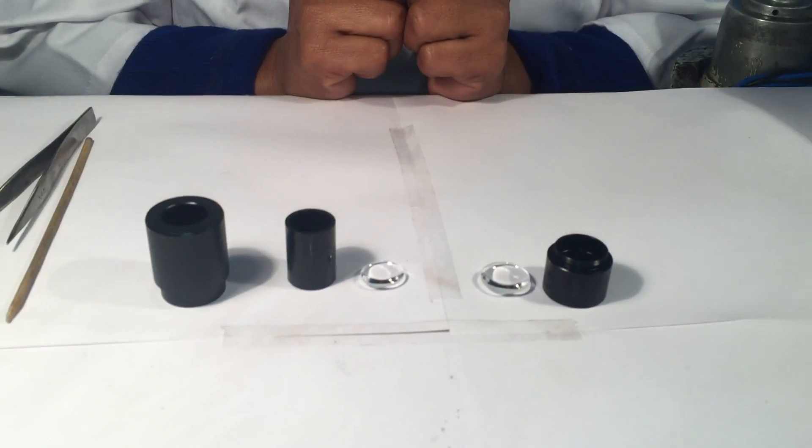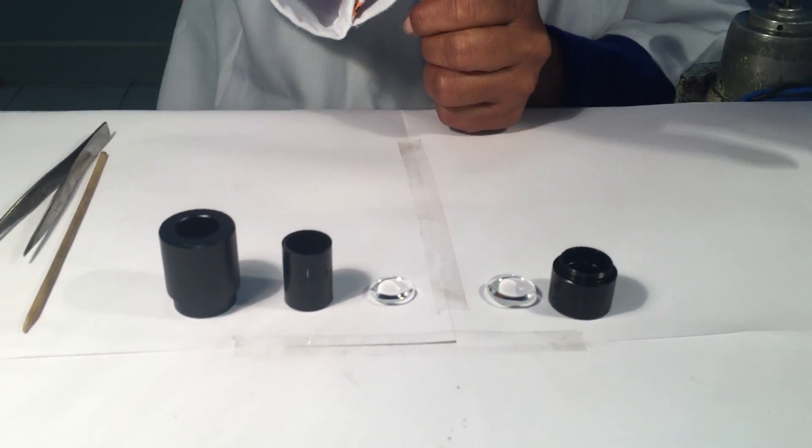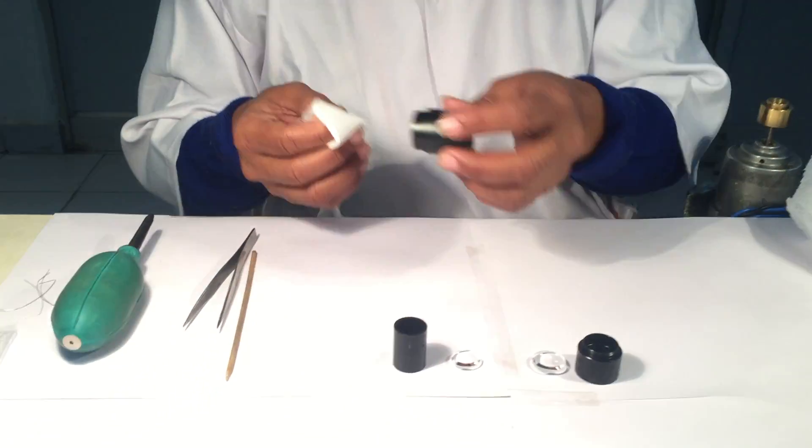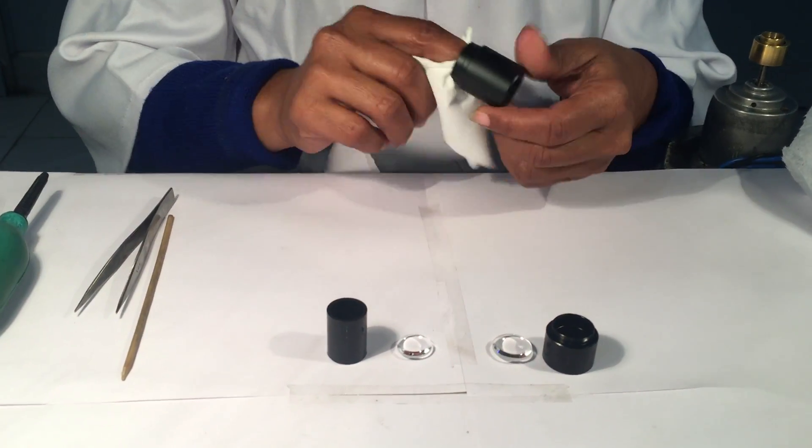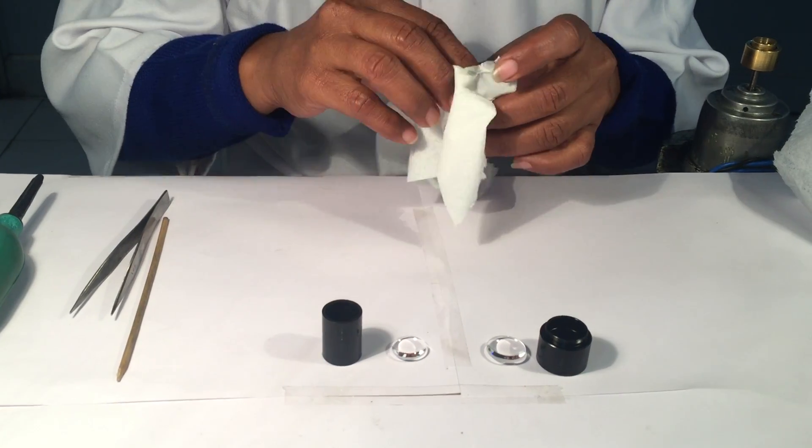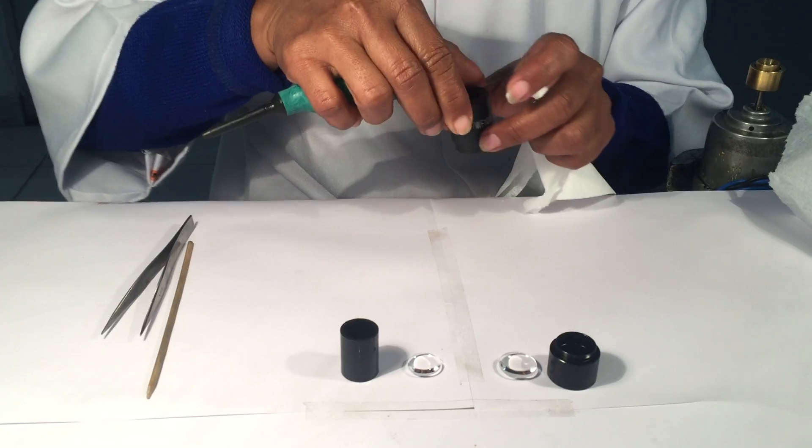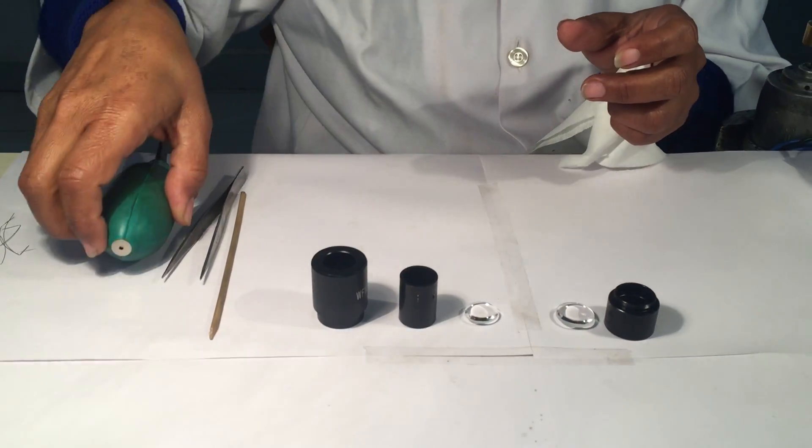So now we will do the cleaning process. We will take a plain cotton tissue paper and rub it firmly inside the upper part. Then we will air blow the same, just in case any particle is left.